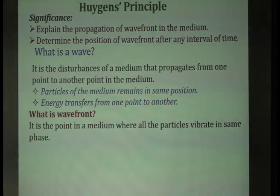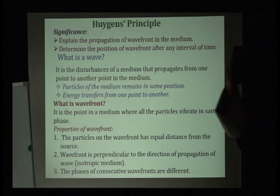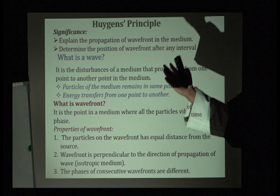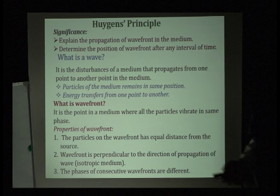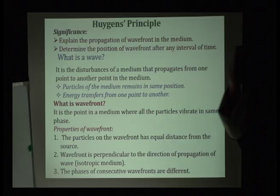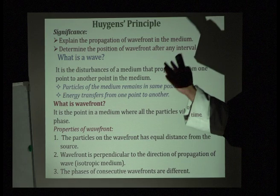Now let us look at how a wave actually propagates, and to understand that we need to know something called wave front. According to the definition, wave front is the point in the medium where all the particles vibrate in the same phase. The particles on the wave front have equal distance from the source of the light. Wave front is perpendicular to the direction of propagation of wave. The phases of consecutive wave fronts are different, which means particles vibrating in different wave fronts will have different phase.